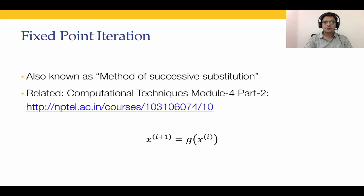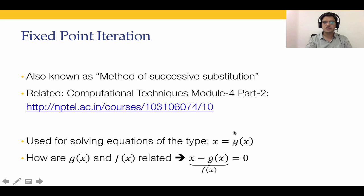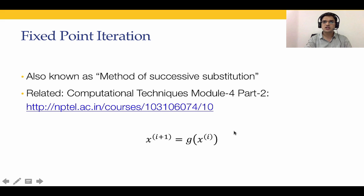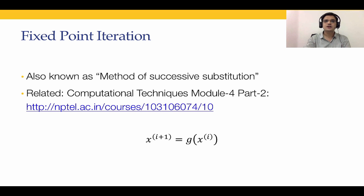The iterative equation we want to solve is x_{i+1} = g(x_i). We start with an initial guess x_0 and substitute it into the equation to get x_1. Then x_1 is substituted into g(x) to get x_2, and so on. We are successively substituting x_i into the equation to get x_{i+1}, which is why this is also known as the method of successive substitution.